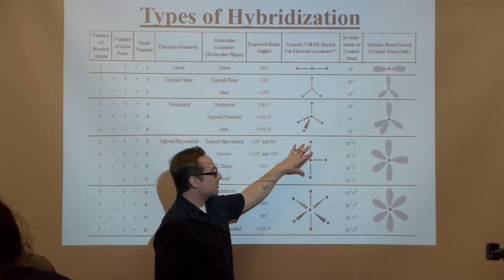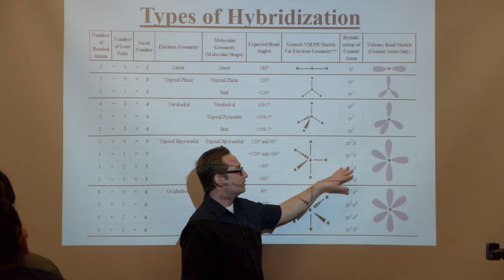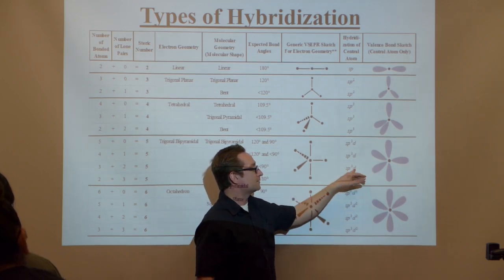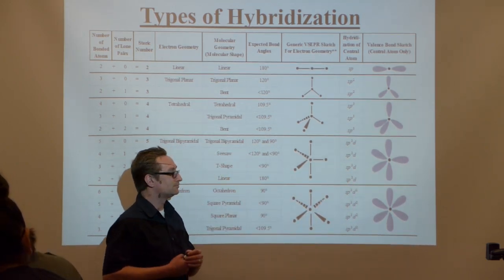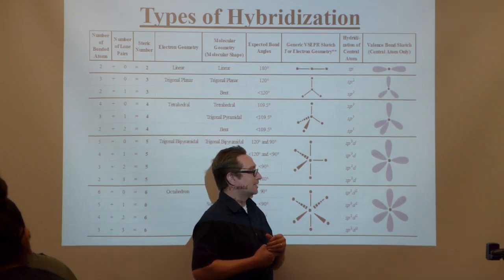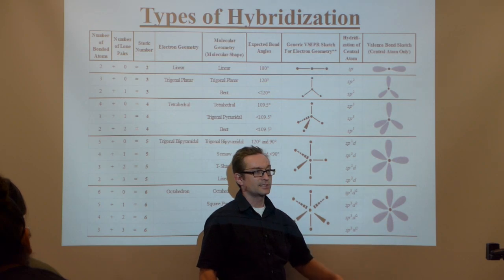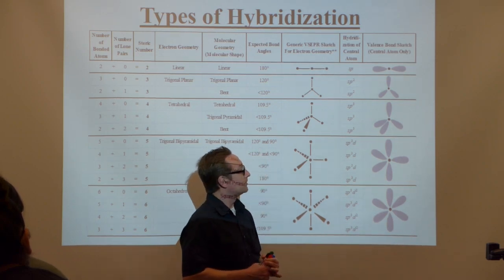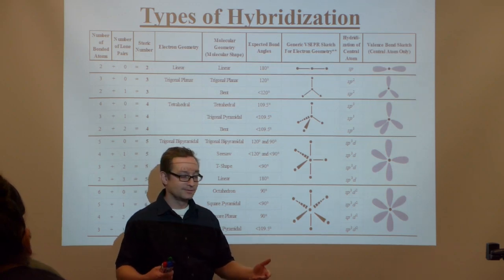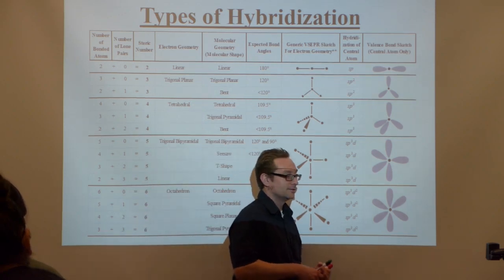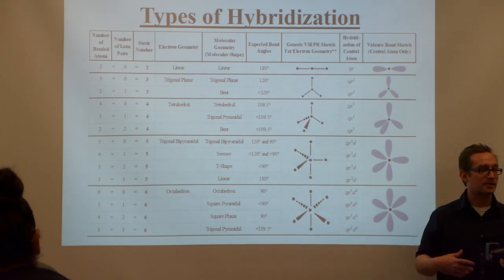For tetrahedrons, you get SP3 hybridization. Each lobe is basically 75% P and 25% S — mixtures of S and P orbitals. For the higher-order structures like trigonal bipyramids and octahedrals, you have to incorporate some of the D orbitals. Steric number five gives five lobes; steric number six gives six lobes.